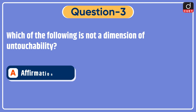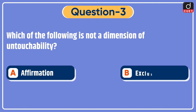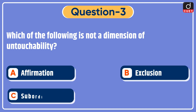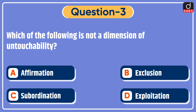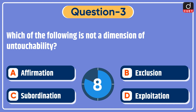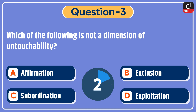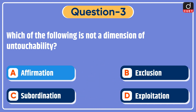Next question: which of the following is not a dimension of untouchability? Options: affirmation, exclusion, subordination, or exploitation? The correct answer is option A — affirmation.